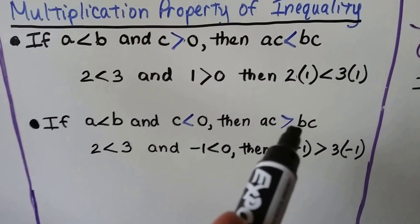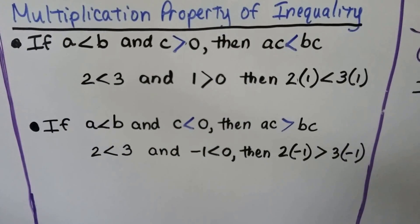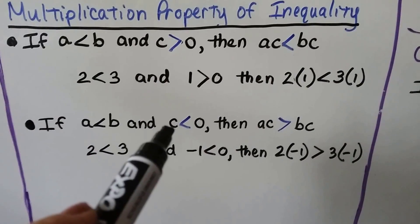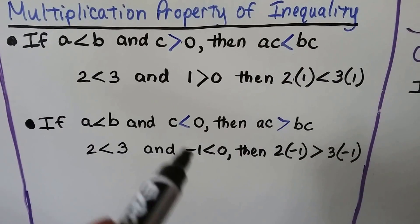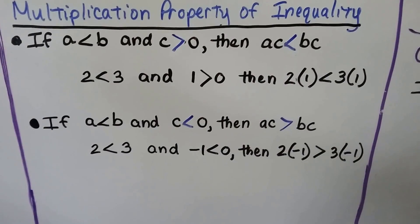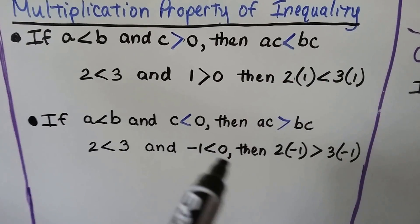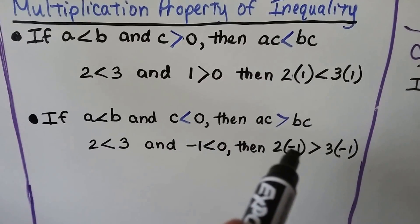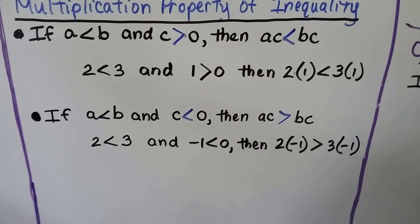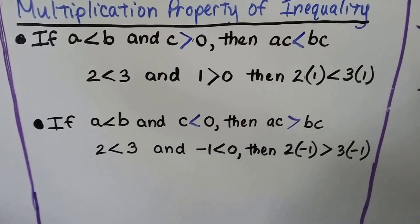Now the signs switch. If a is less than b and c is less than 0 — in this case c = −1 — then ac is greater than bc. So 2 is less than 3, and −1 is less than 0, then 2 × (−1) = −2 is greater than 3 × (−1) = −3. Negative 2 is closer to 0, so it's bigger.